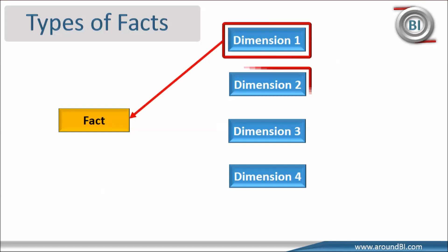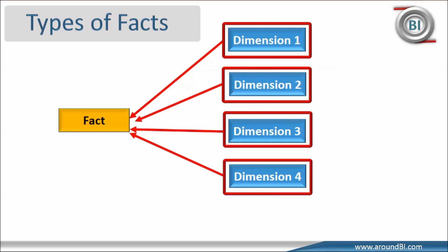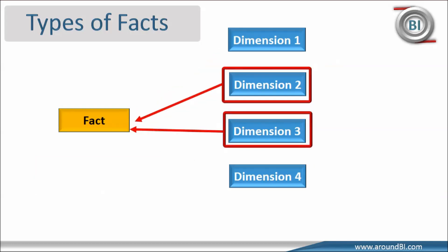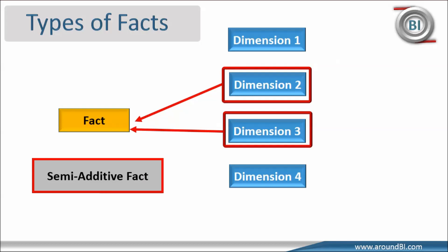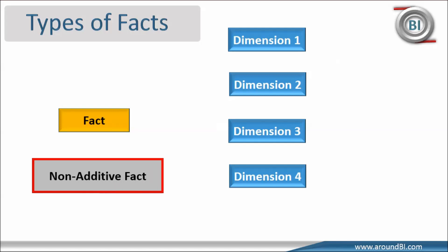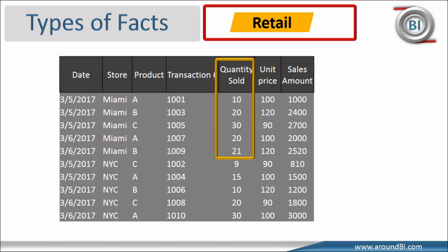If a fact can be summed up for all dimensions in the table — like how quantity sold is aggregated for the store dimension — then it is called an additive fact. If it can be summed up for some dimensions but not all, then it is a semi-additive fact. And if it cannot be summed up for any of the dimensions present in the table, then it is a non-additive fact. Taking quantity sold as an example, we can aggregate it to find the total number of sold products for each store, each product, or each time dimension. Clearly, it is an example of an additive fact. In a data warehouse structure, additive facts are the most flexible and useful facts because they can be summed across any of the dimensions associated with the fact table.